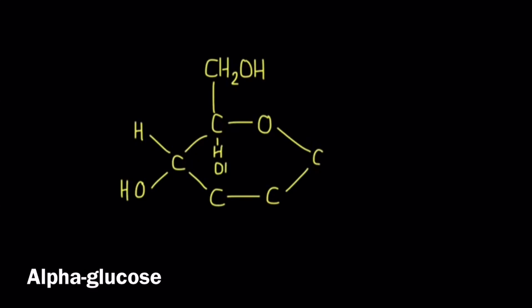Pay particular attention to where the H and the OH are located on the first carbon on the right hand side, the H being on the top and the OH at the bottom. Because if you swap them around and you put the H at the bottom and the OH at the top, that makes it beta glucose.